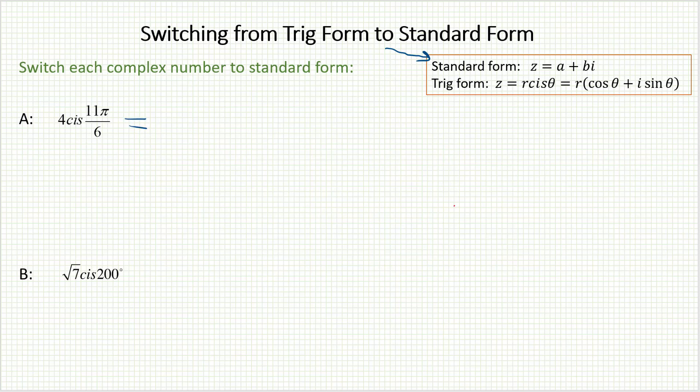Simply take the trig form, write it out in its fuller version, so with the parentheses. 4 would be the modulus, and then I'd have in the parentheses cosine 11π over 6 plus i sine 11π over 6.